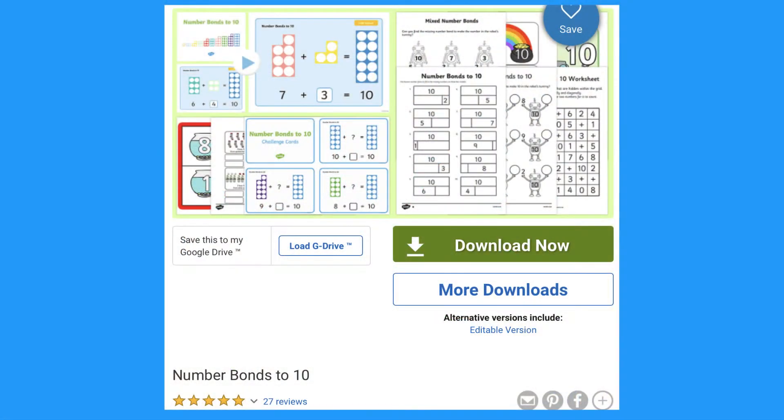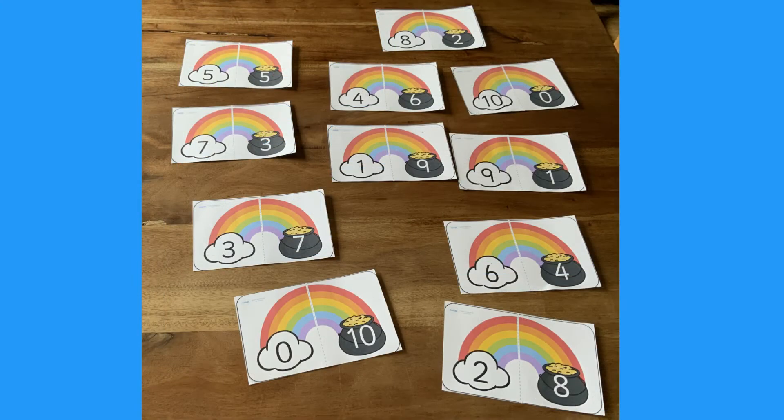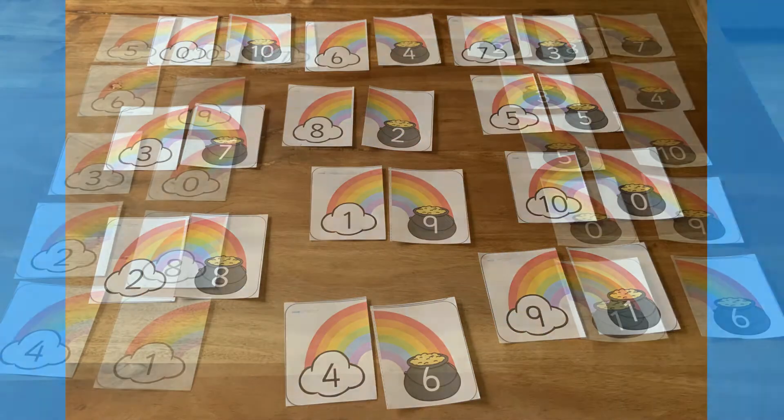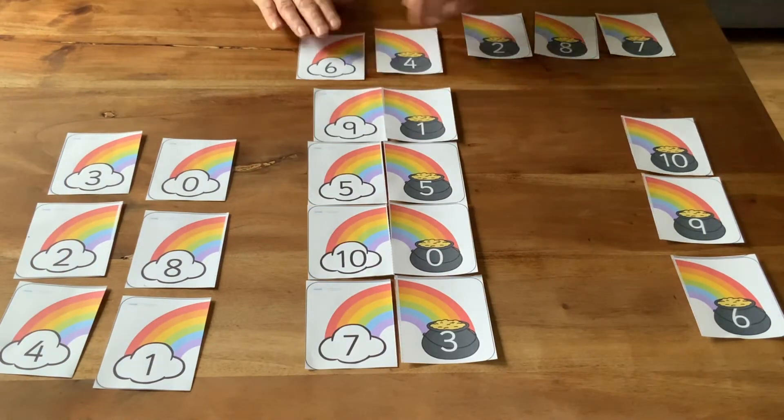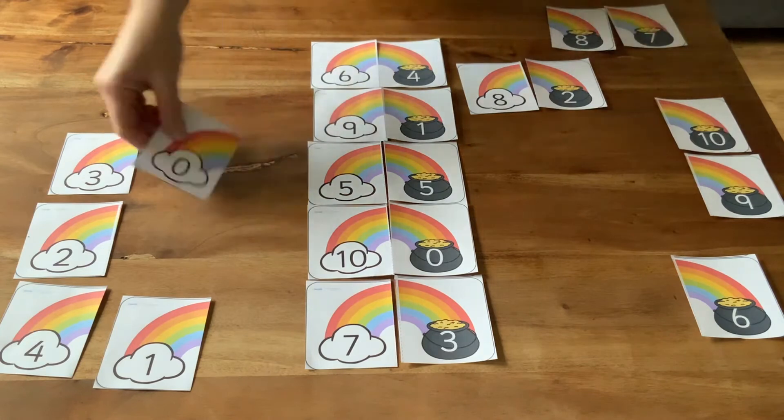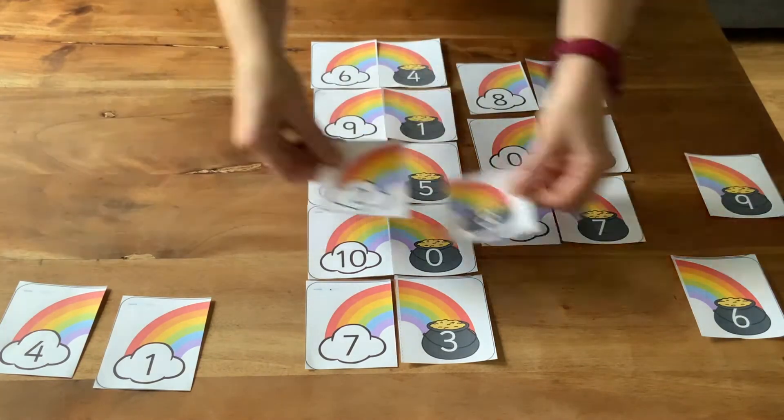This Bonds to 10 pack has lots of activities. I love these rainbow pairs cards. Cut them out and cut up each pair. Now set out clouds on one side and pots of gold on the other side. Can children match up the pairs to make their number bonds to 10?